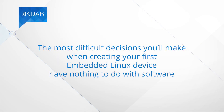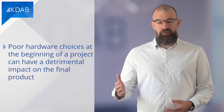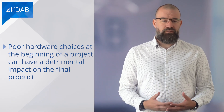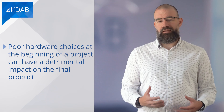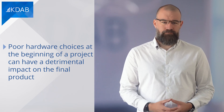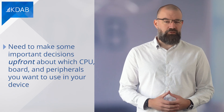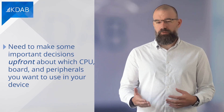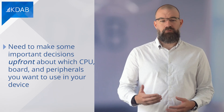The most difficult decisions you'll make when creating your first embedded Linux device have nothing to do with software — they'll be about the hardware. While it is possible to do a software upgrade mid-development without massive disruption and waste, attempts to make such changes in hardware development come at a much higher cost. As we discussed in the first episode, poor hardware choices at the beginning of a project can have a detrimental impact on the final product. So you need to make some important decisions up front about which CPU, board, and peripherals you want to use in your device.